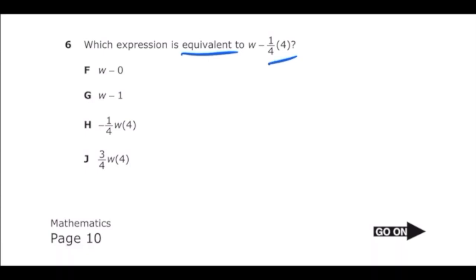So I can go ahead and multiply 1/4 times 4, and 4 is really just the same thing as 4 over 1. Once I do that, I'm just going to multiply across and I'm going to get 4 over 4, and obviously 4 divided by 4 is just equal to 1. So I can rewrite this expression as W minus 1, and if we look at the answer choices, that's letter G.